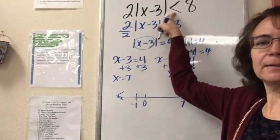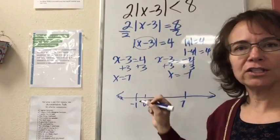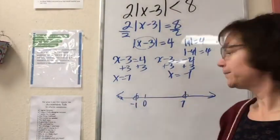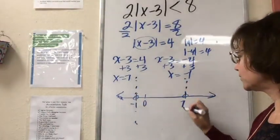These boundary points are not included because it doesn't have an or equal to. If it did, I would make a solid dot. But in this case, my dots are open.